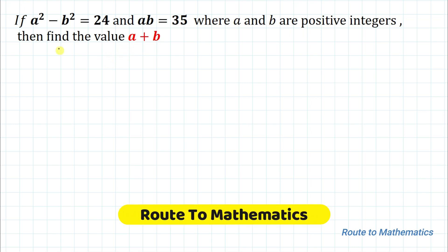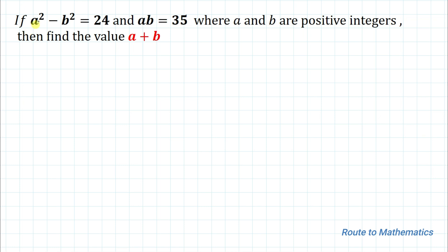Hello everyone, welcome to Root 2 Mathematics. In this video we are going to solve this interesting algebraic equation. The given question is: if a² minus b² equals 24 and ab equals 35, where a and b are positive integers, then find the value of a plus b. Without any delay, let's start the solution.